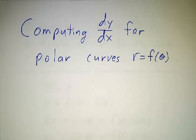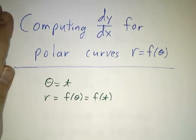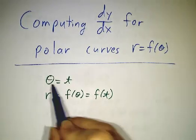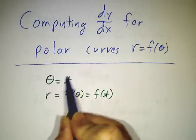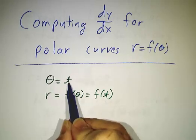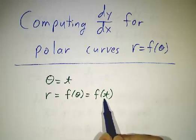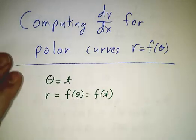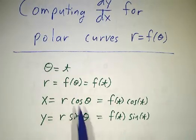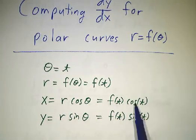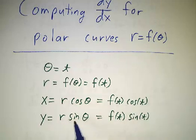The key is to think of it as a parametrized curve. If we just let a parameter t and we just let theta equal t, and then r is f(θ), which is just f(t), and that tells us what x and y are, because x is r cos θ, that's f(t) cos(t), and y is r sin θ, so that's f(t) sin(t).